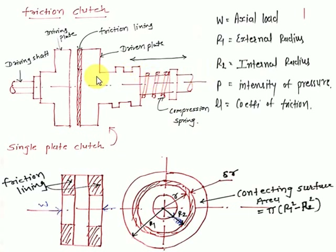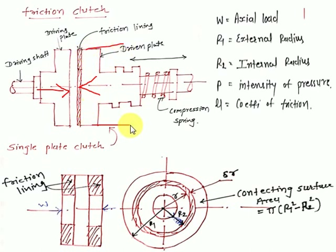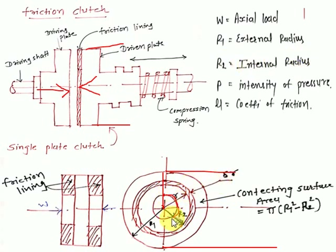The axial load W acts from one side to the other on the plate. r1 is the external radius — from the center to the outer edge of the shaft, that distance is r1. r2 is the internal radius — the smaller radius. You can see in this figure: r2 is the inner radius.